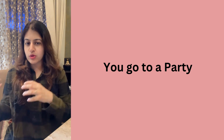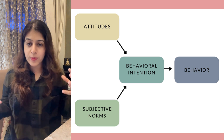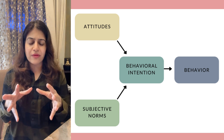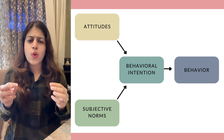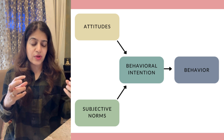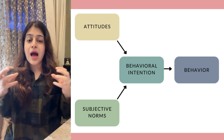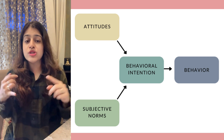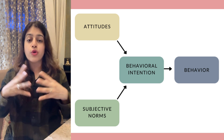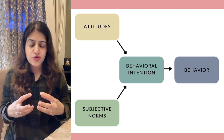For example, let's start from the end of the diagram and work backward to the beginning. The final element is behavior — say you go to a party and start socializing, talking to all the important people there. That is your behavior. The question is: why are you behaving this way? Your intention is leading to that behavior. The intention is that you know these people are important for your business and you need to build your network.